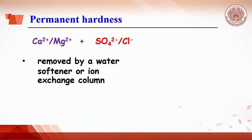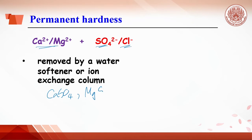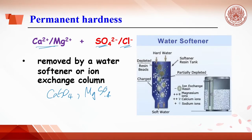Permanent hardness is caused by the presence of calcium ions together with non-carbonate anions such as sulfate or chloride ions. Calcium sulfate or magnesium sulfate do not precipitate out as temperature increases, so permanent hardness cannot be removed by boiling. It can be removed using a water softener or ion exchange column.